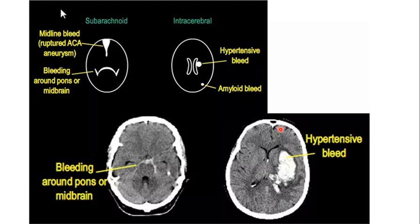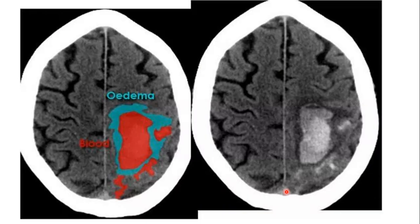Bleeding can be either intraparenchymal or subarachnoid hemorrhage. The intraparenchymal component is surrounded by brain parenchyma, while subarachnoid hemorrhage is seen in the subarachnoid spaces — over the cerebral sulci, at the midline, over the falx cerebri, at the quadrigeminal cistern, and other cisterns at the base of the brain. You can see at the prepontine cistern a density indicating subarachnoid hemorrhage, while the intraparenchymal hematoma here is extending into the adjacent lateral ventricle — intraparenchymal hematoma with intraventricular extension.